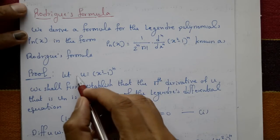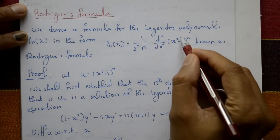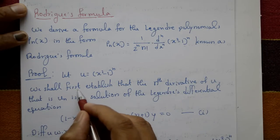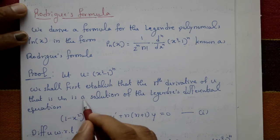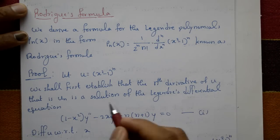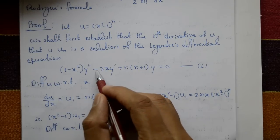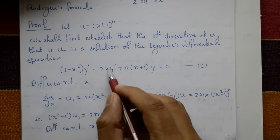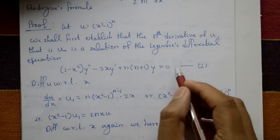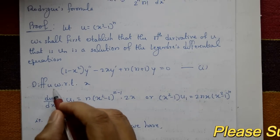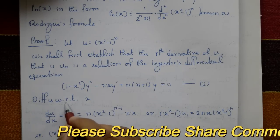Let u = (x² - 1)^n. We shall first establish that the nth derivative of u, that is u_n, is a solution of the Legendre differential equation: (1 - x²)y'' - 2x·y' + n(n+1)·y = 0. This is equation number 1.